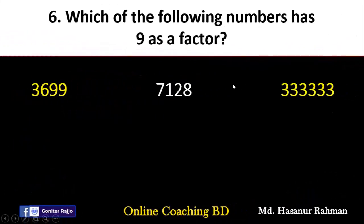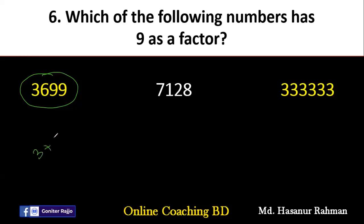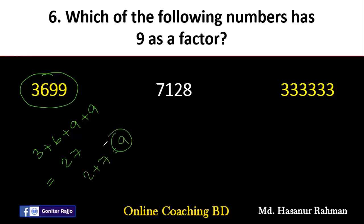Number 6 says: which of the following numbers has 9 as a factor? This is very simple. 9 is a factor of a number if it is a factor of the sum of its digits. If the sum of the digits is divisible by 9, then the number is divisible by 9. Let me check: add the digits 3 plus 6 plus 9 plus 9. 6 plus 3 is 9, 9 plus 9 is 18, 18 plus 9 is 27. Adding 2 plus 7 gives 9. Yes, 9 is divisible by 9. So 3699 is divisible by 9.